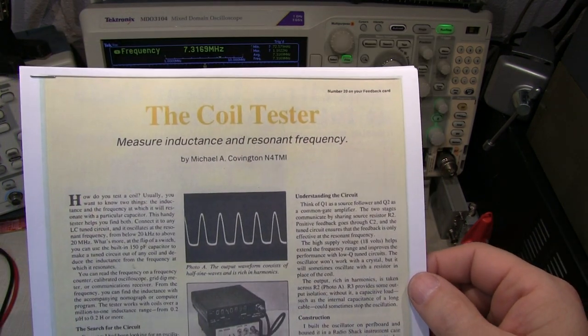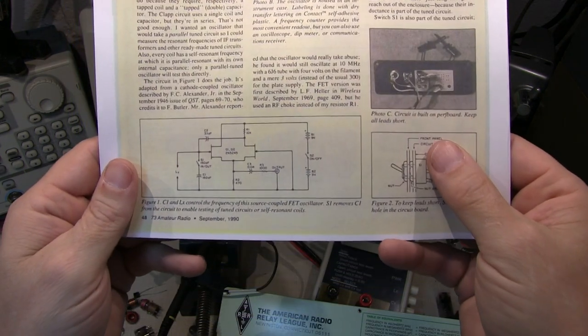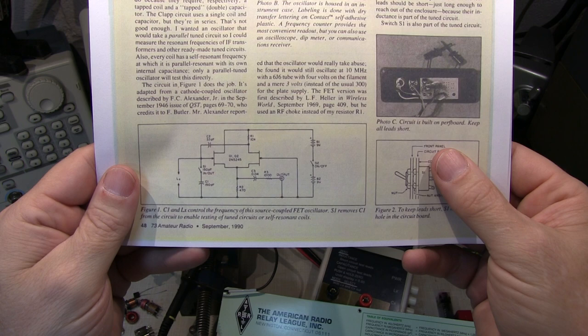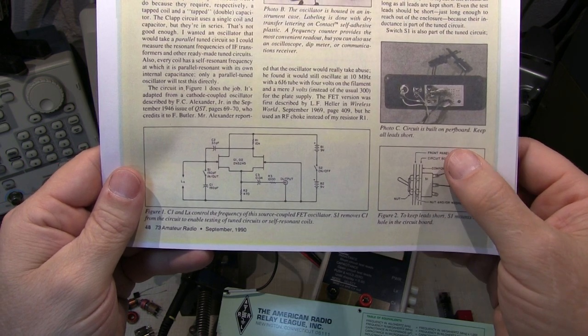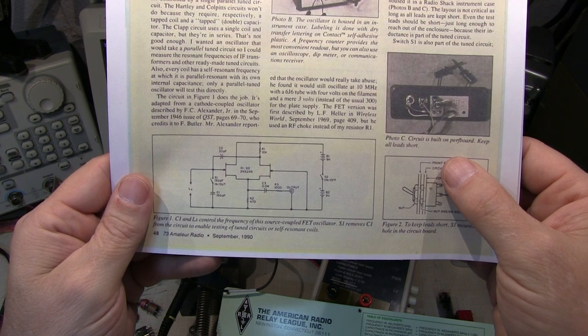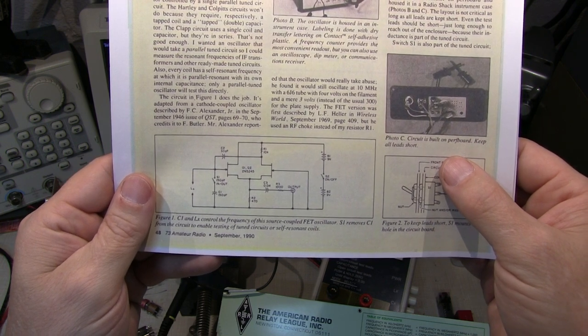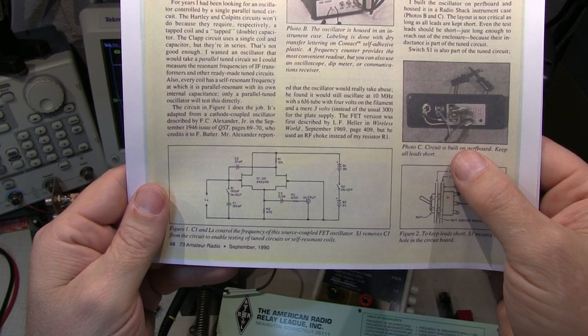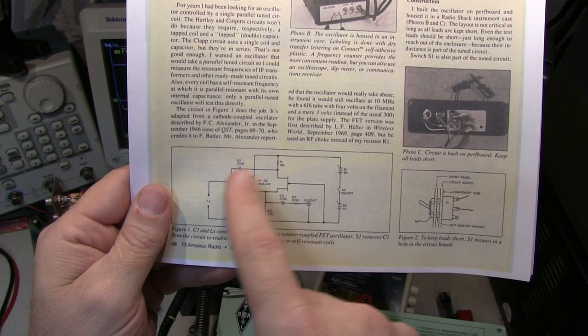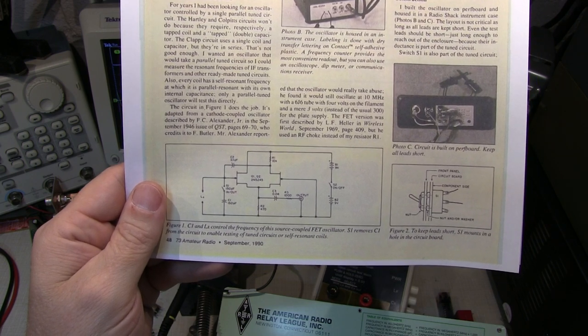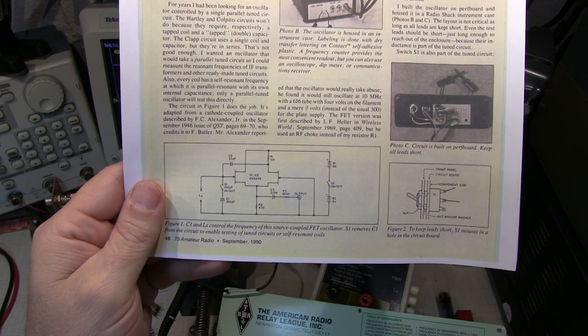In the article, Michael describes his search for a test oscillator that would work with parallel tuned circuits. He wanted to be able to test both inductors as well as parallel tuned circuits like IF transformers. And that kind of knocks out the use of a CLAP oscillator or the more traditional Hartley or Colpitts oscillators. So he came across this circuit. It was actually originally published as a circuit with vacuum tubes and has been adapted here to use JFETs.